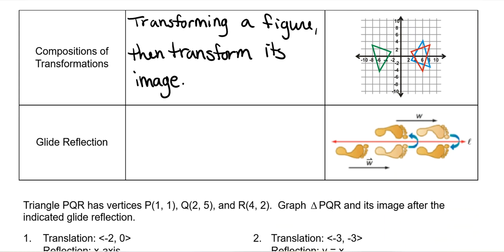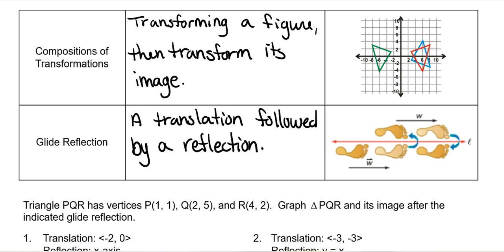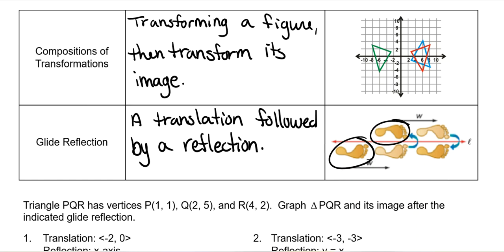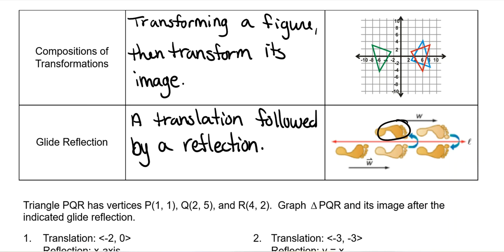A glide reflection is a special composition of transformations — it is a translation followed by a reflection, in that order. This image on the right is an example: you take this foot, translate it up to the next foot, and then reflect it over the line. That officially is a glide reflection. Getting from here to here is a glide reflection, and it's basically showing your footsteps.